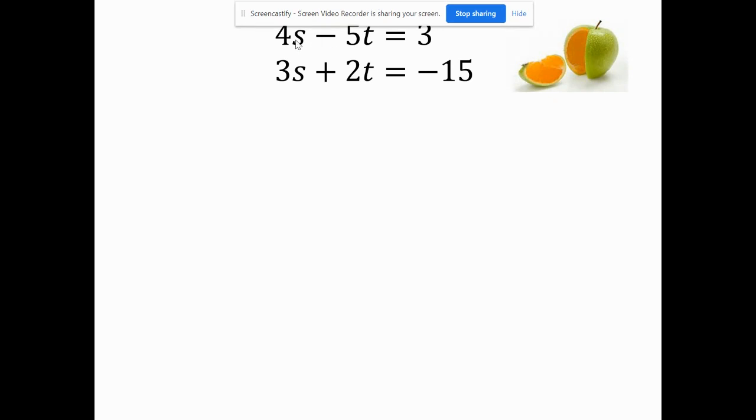My problem is this here. Nothing I can multiply by 4 makes 3 or 3 makes 4 without making them fractions, or 5 into 2 or 2 into 5. So that means I'm going to change two things. So what I want to do is this. I can either change the s's, the 3's and 4's, or the t's, the 5 and 2.